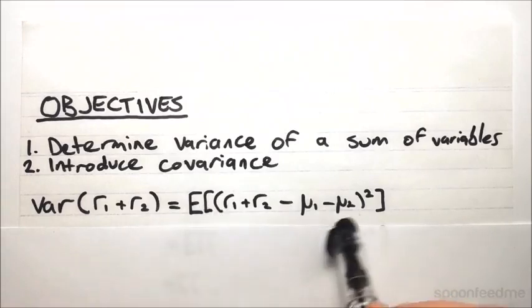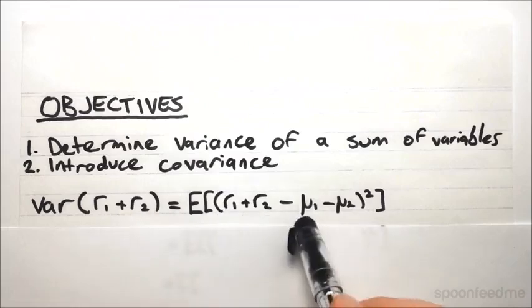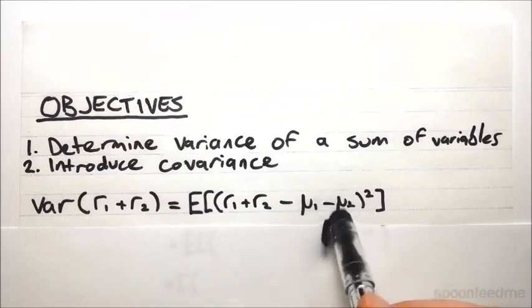So we simply plug it into our usual formula. We've got the rate which is R1 plus R2 minus the average, the average of them being µ1 plus µ2, and we square it.